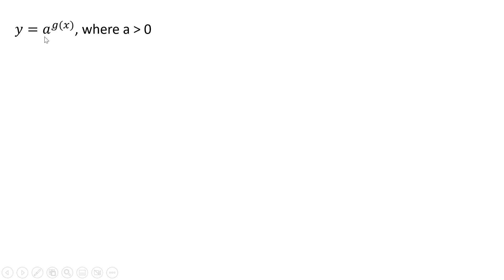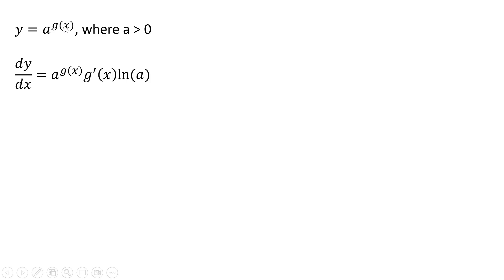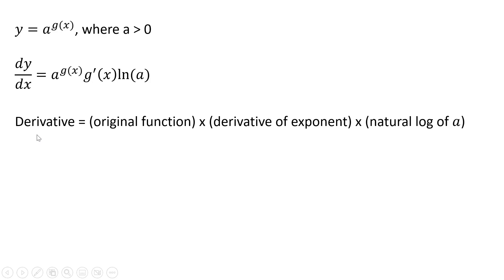Here's our exponential function: y equals a raised to g of x, where a is greater than 0. The derivative is basically three parts. We're going to first rewrite the original function, then take the derivative of what's in the exponent, and then multiply that by the natural log of a. So the derivative of an exponential function: write the original function, multiply it by the derivative of the exponent, and then multiply by the natural log of a.